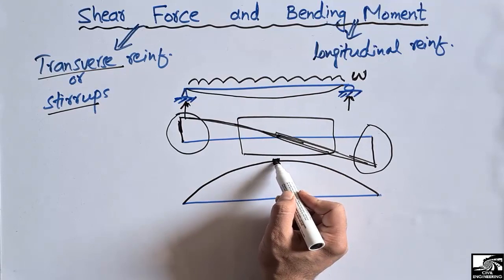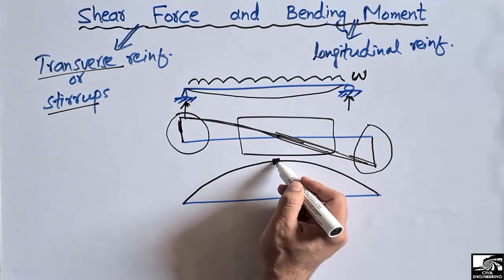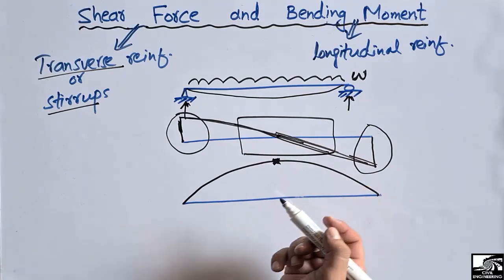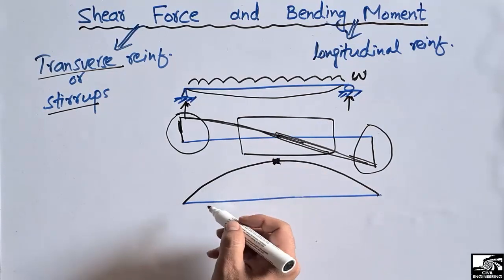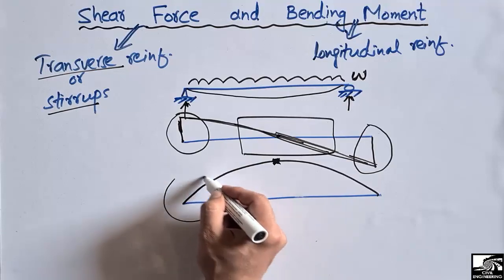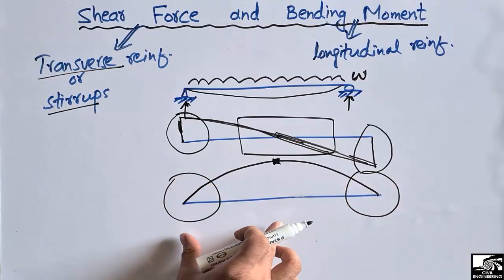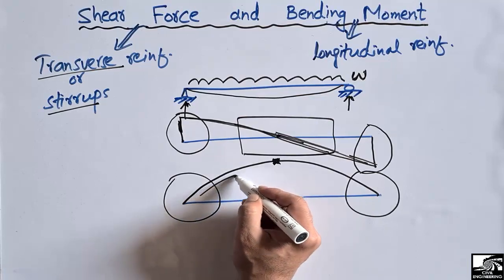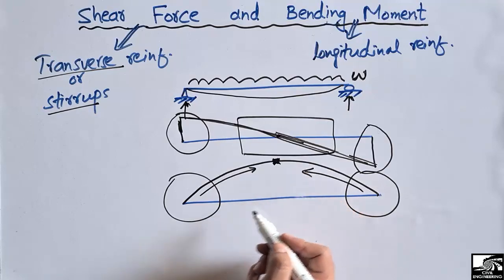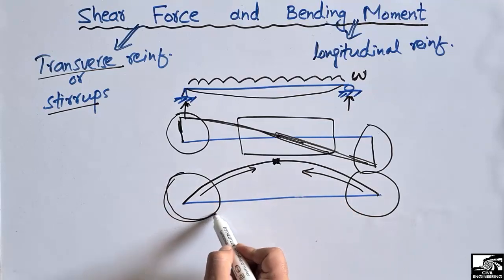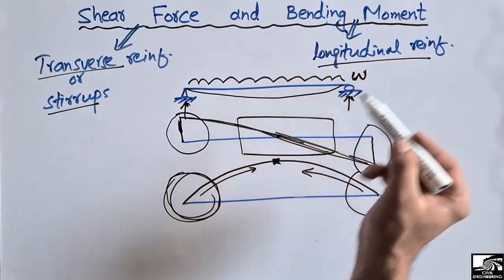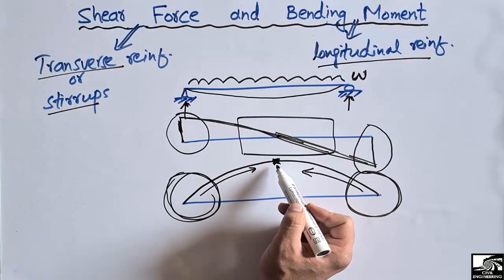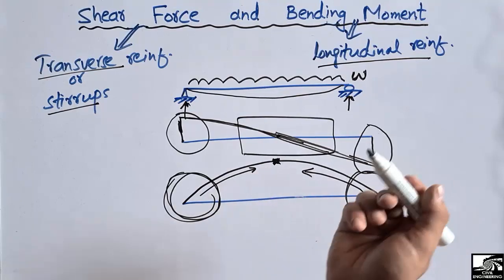Due to the maximum bending moment acting at the mid-span of the beam, we should provide high reinforcement at the mid-section. At the portions near the supports the bending moment is low — the value increases from the supports up to the midpoint. So there is less requirement for longitudinal reinforcement at the supports, while at the mid-span there is high bending moment, so we need to provide a higher number of steel bars.